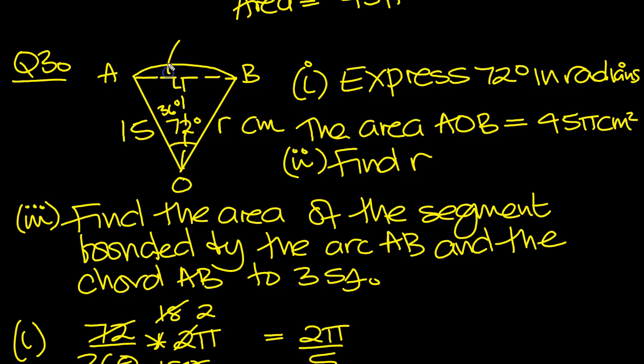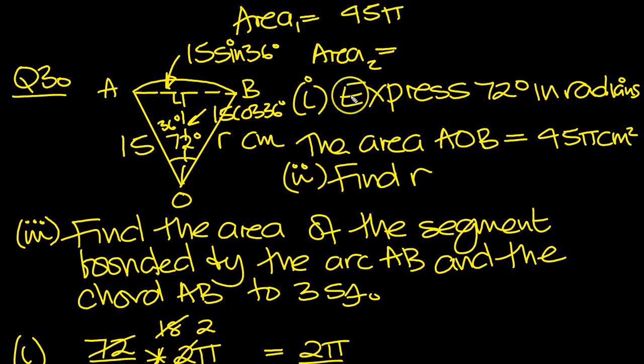Okay, this is 15, this distance here is 15 sine 36, isn't it? And this distance here is 15 cosine 36 degrees. So area, area 2 then, this is area 1, just move this down slightly. Area 2 would be half base, which is this. So that would be 15 sine 36, times height, which is 15 cos 36.